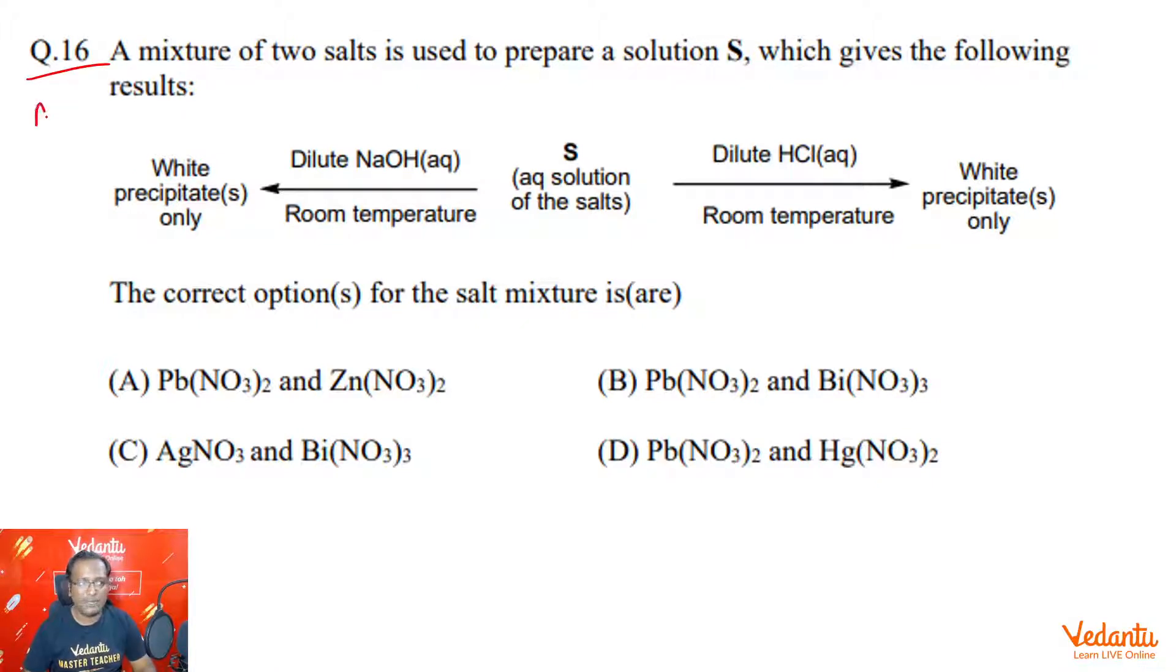This is a multiple correct type question, so be careful. You have a mixture of two salts which when you react them with dilute HCl, you get only white color PPT. If you react them with dilute NaOH, you again get a white color PPT.